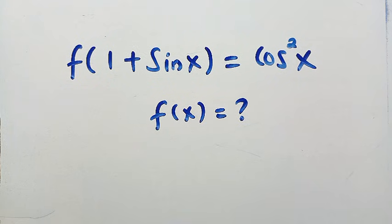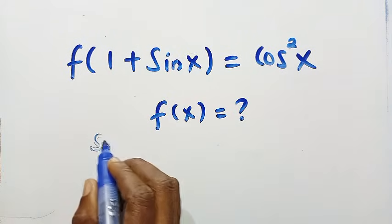Good day viewers, you are welcome. How to solve this nice functional equation? We have an inserted domain in the function which is 1 plus sin x, and the right hand side is cos²x. This involves trigonometry functions and we want to find f(x). I will solve this in two different ways. Let's get into it.